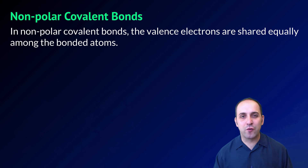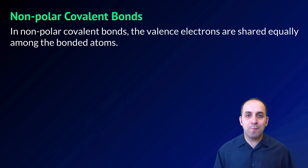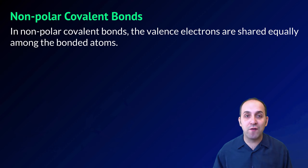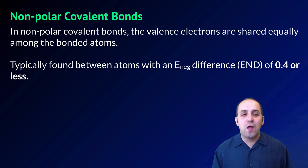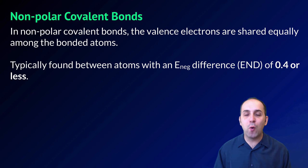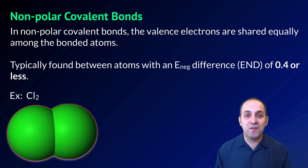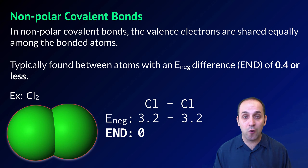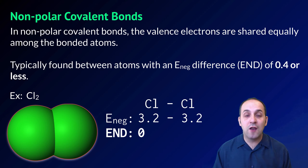Not all covalent bonds are created equal. Depending upon the difference in electronegativity in the atoms that comprise the covalent bond, the covalent bond can have a different amount of polarity. In a non-polar covalent bond, the valence electrons are going to be shared equally among the bonded atoms. Generally speaking, atoms with an electronegativity difference of 0.4 or less are going to form non-polar covalent bonds. A good example of this is chlorine — when chlorine bonds to itself, the electronegativity difference is actually zero, so the electrons are shared equally among both atoms. Chlorine gas, Cl₂, is a great example of a non-polar compound.